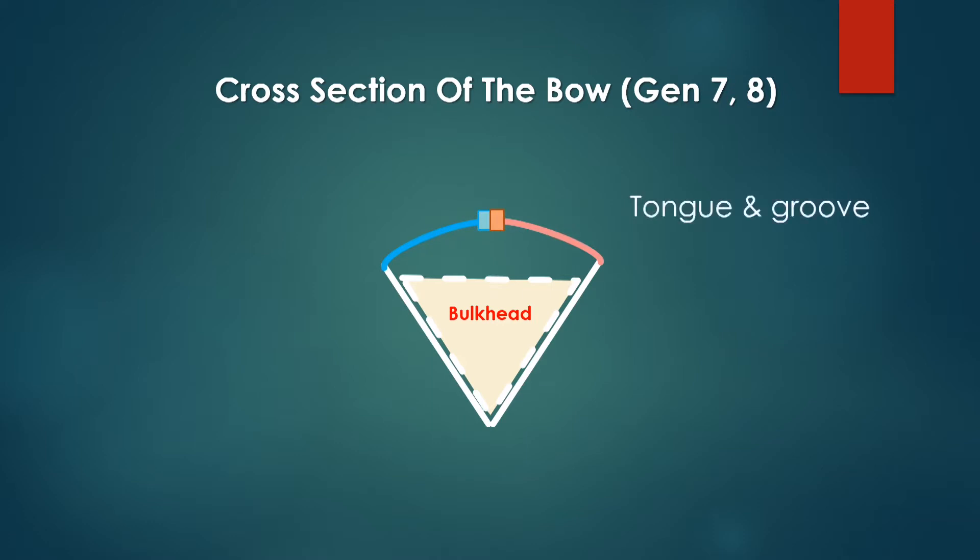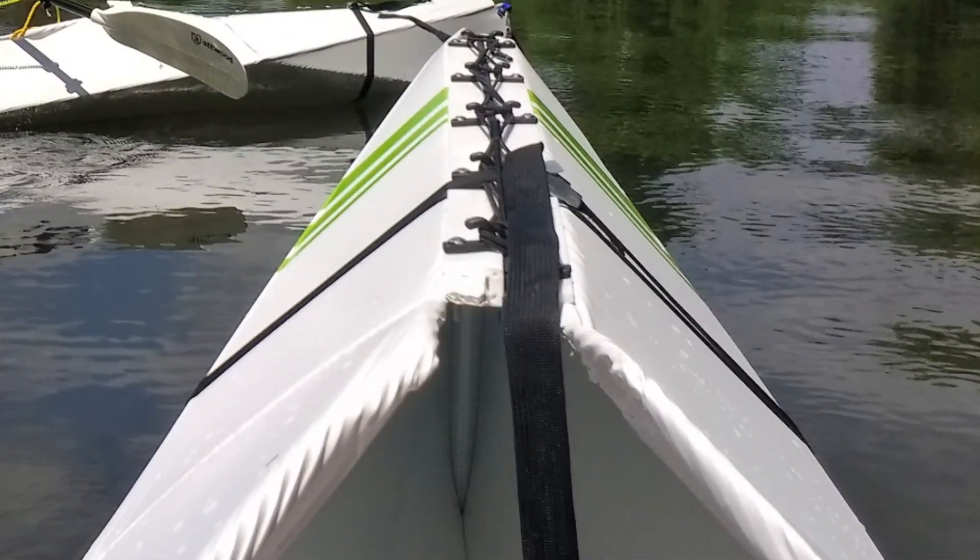In my Gen 7, I used a tongue and groove approach. It is a very solid design and there's no need for the bow head.